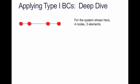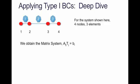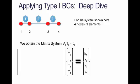Let's look at how we apply the Type 1 boundary conditions in the 1D case. Let's take as our example a small system: 4 nodes numbered 1, 2, 3, and 4 in the global numbering scheme, 3 elements. From this we can build out the matrix system, AIJ·TJ = BI. We've seen how to do this in previous videos.